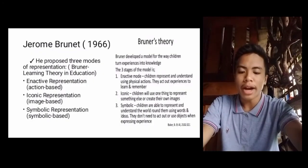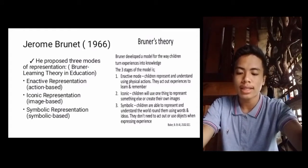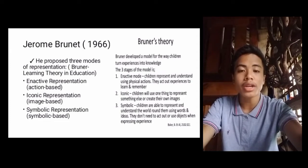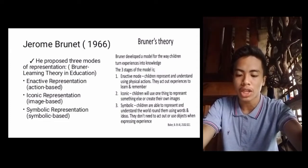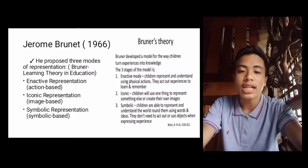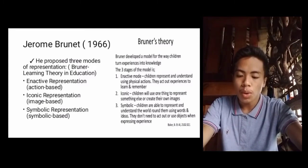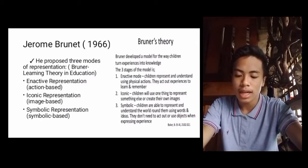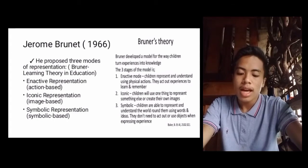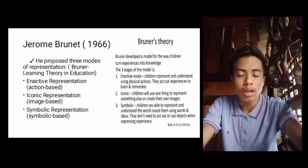For Jerome Bruner in 1966, he proposed three modes of representation, called Bruner's Learning Theory of Education. Number one is enactive representation, or action-based. Number two is iconic representation, or image-based. Number three is symbolic representation, or language-based.